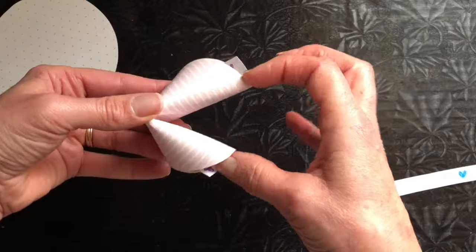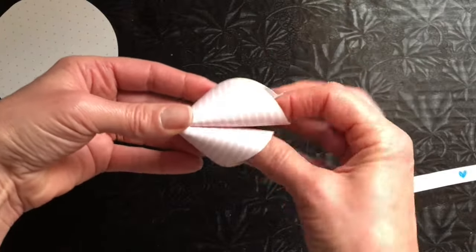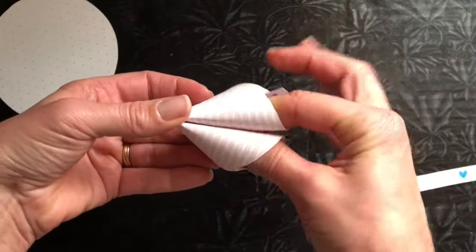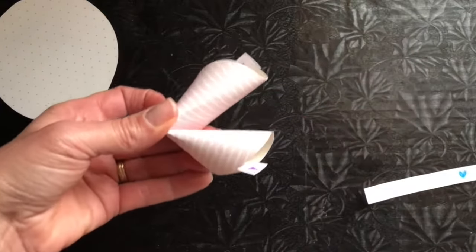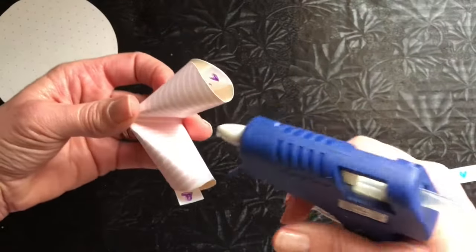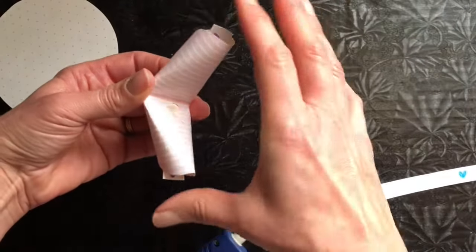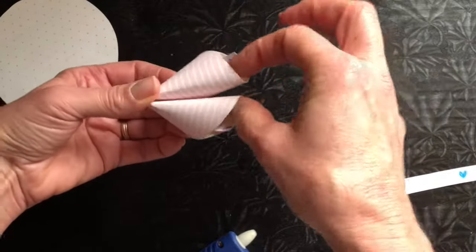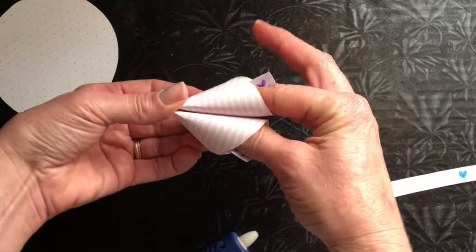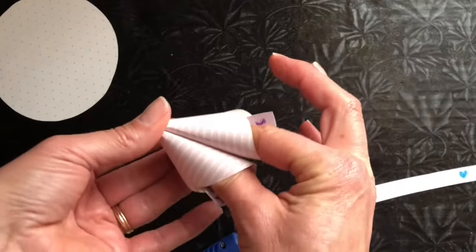We can straighten it out if we want to. There we go. And now we're going to just take a glue gun, put a little bit of glue in the middle and press it back together. And we'll just hold that for a second while the glue sets.